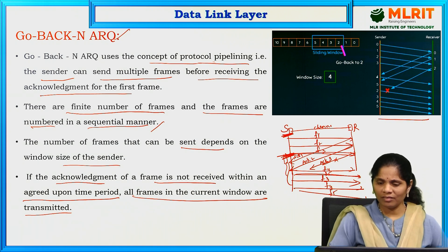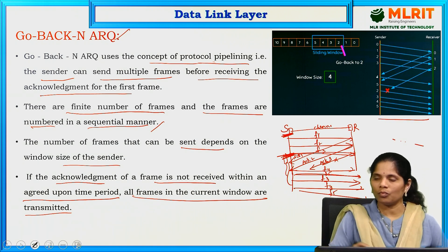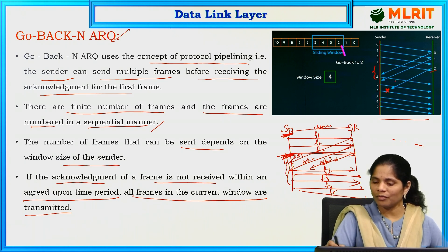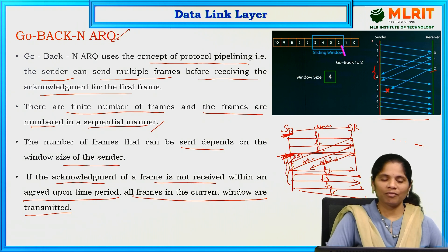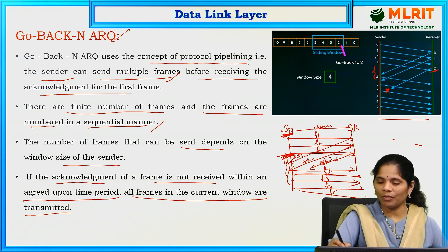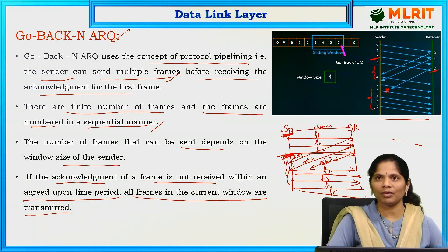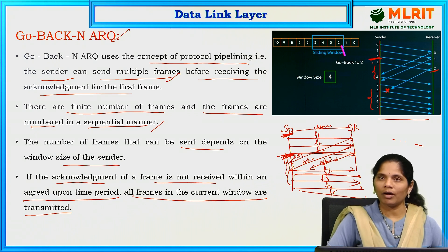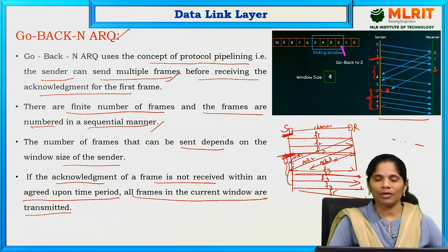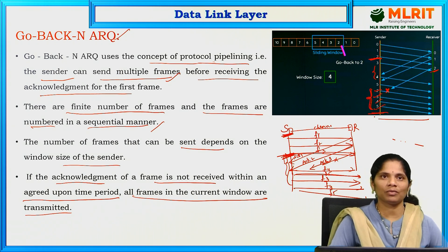Looking at the sliding window picture: I sent frames 0, 1, 2 and received acknowledgement for 0 and 1 but did not receive acknowledgement for frame 2. In that same period I sent frames 4 and 5 as well, because I can send multiple frames at a time. But since I did not receive the acknowledgement of frame 2, from frame 2 onwards I have to retransmit all the frames — frame 2, 3, 4, 5. Where I lost the frame, from that particular frame I have to resend all frames. That is Go Back N ARQ.